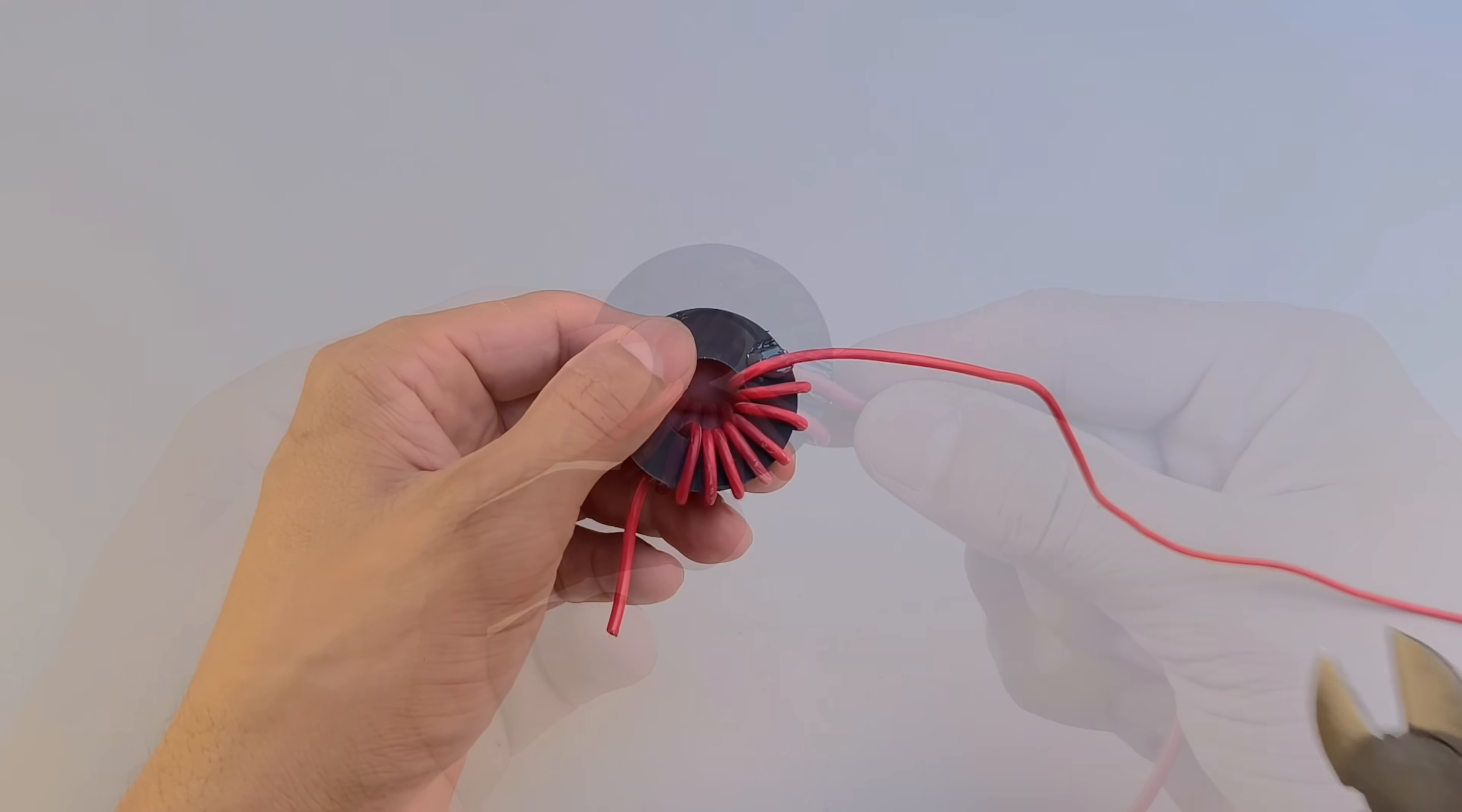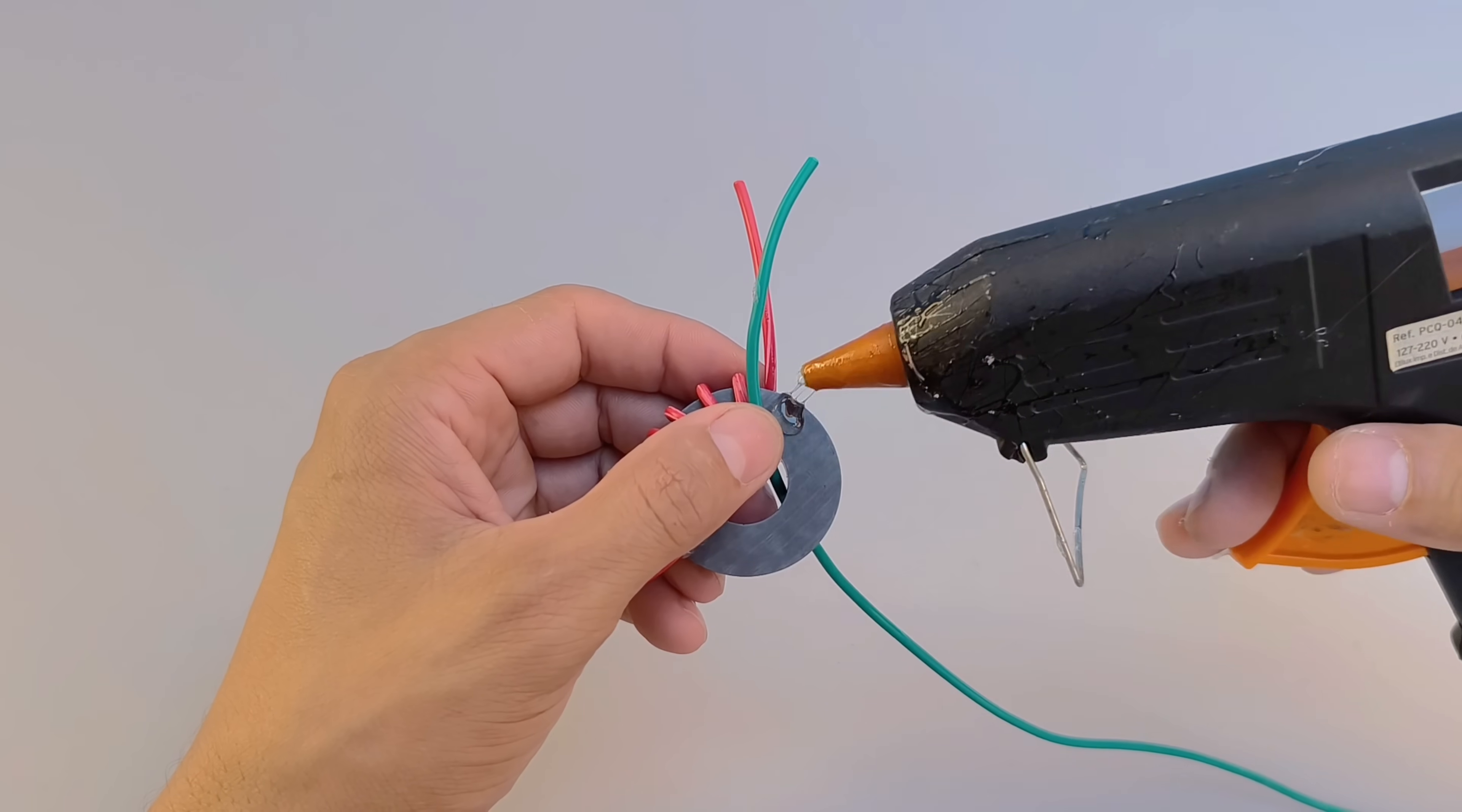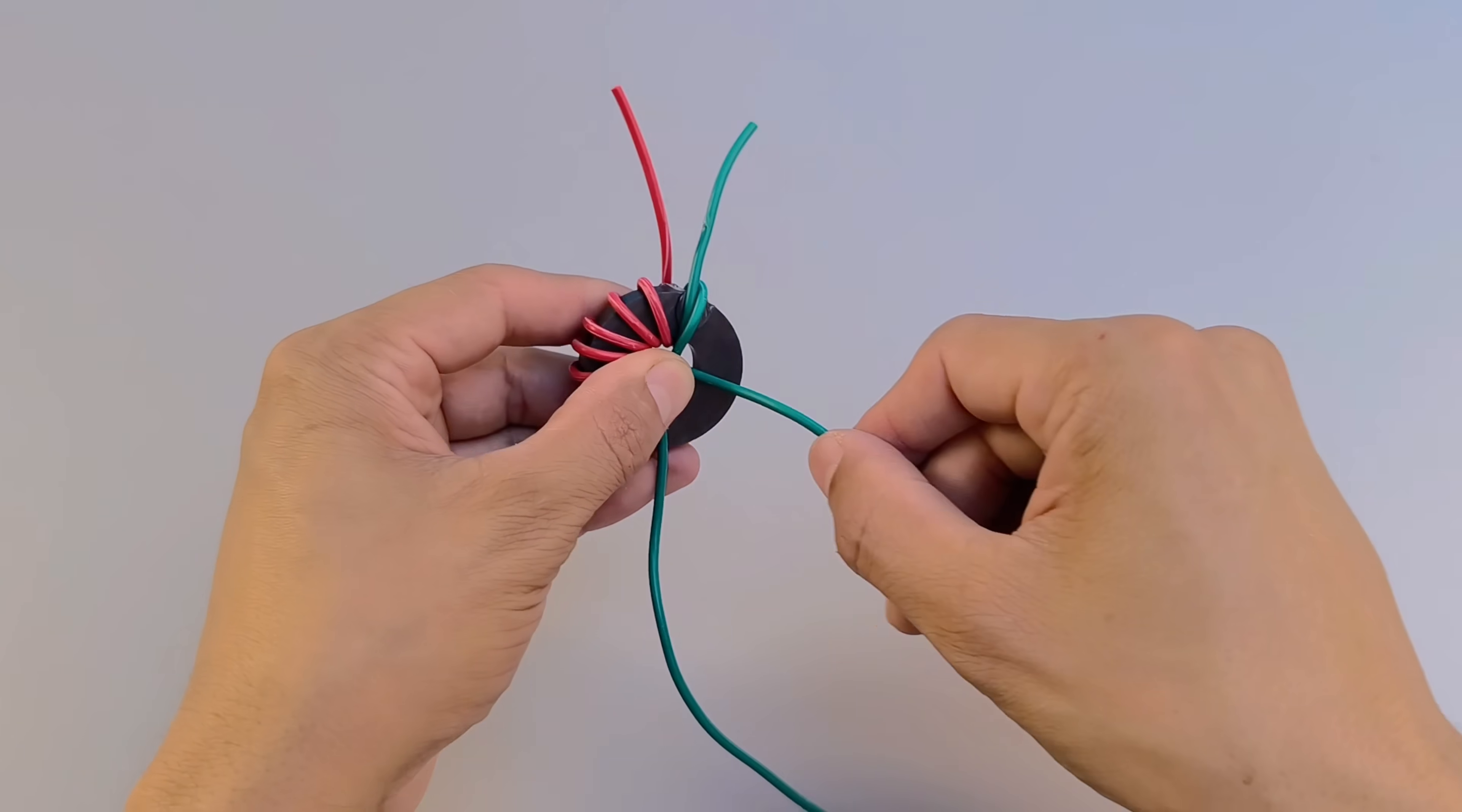This winding method ensures that the magnetic field lines are concentrated and enhance the interaction between the magnet and the wires, enabling the generation of electricity or the creation of an electromagnet, depending on the application.